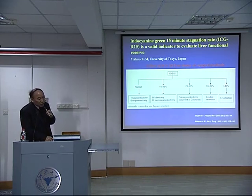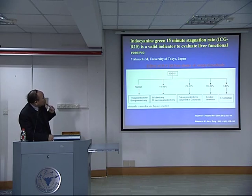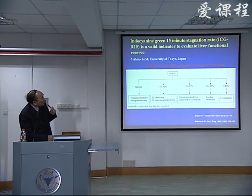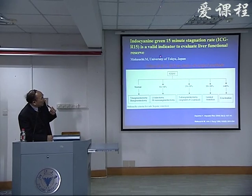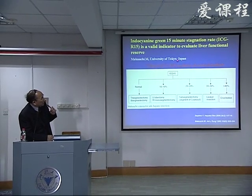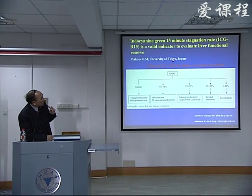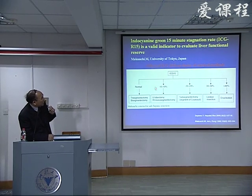Another variation for assessing liver function is ICG — indocyanine green. We measure the ICG retention rate at 15 minutes, called ICG R15. This is a very useful variation for evaluating liver function. Recently, in Japan and the USA, and other countries, it is very commonly used as criteria for evaluation of liver function.